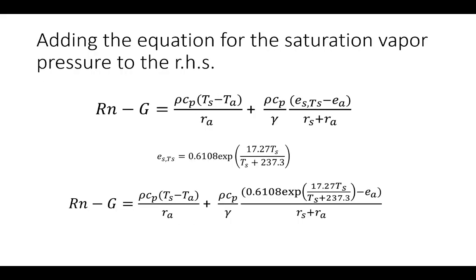Putting our equations together, there's the energy balance equation with substitutions on the right-hand side where we've substituted our definitions of sensible heat flux and latent heat. We add our definition of saturation vapor pressure and get the equation at the bottom. The key challenge is that surface temperature appears in the equation and there's no closed-form algebraic solution — only one surface temperature satisfies it. Penman recognized that and found a way to eliminate surface temperature from the equation.